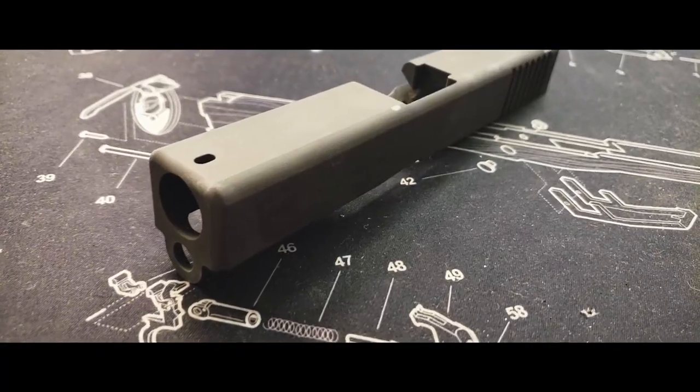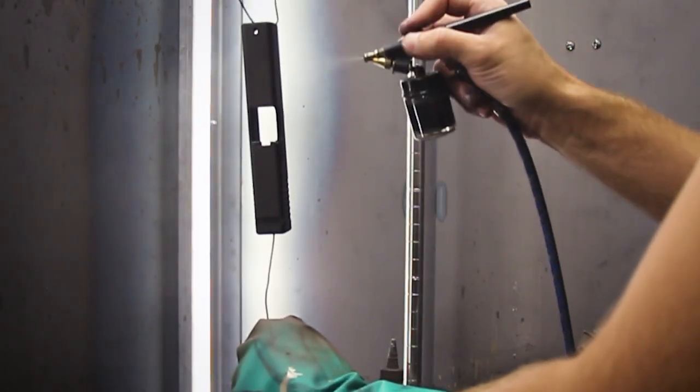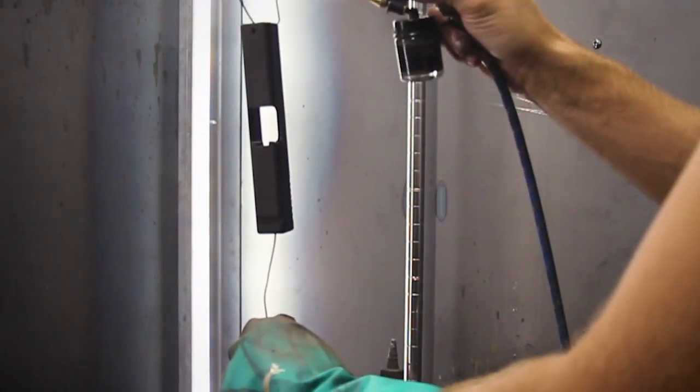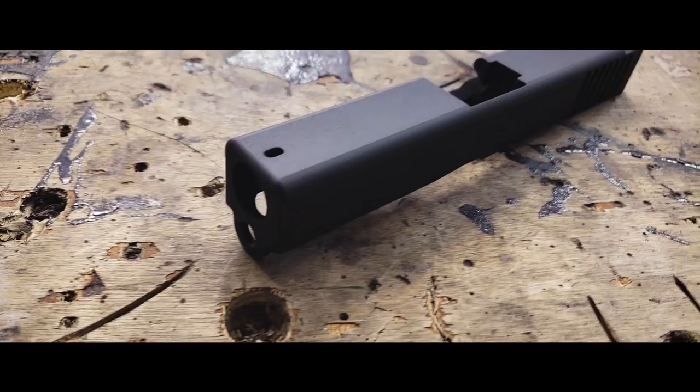With our prep work done, we apply our base coat. The base coat is black. Now our base coat is going to be the appropriate thickness as recommended by the manufacturer's product, because this is our protectant coat.